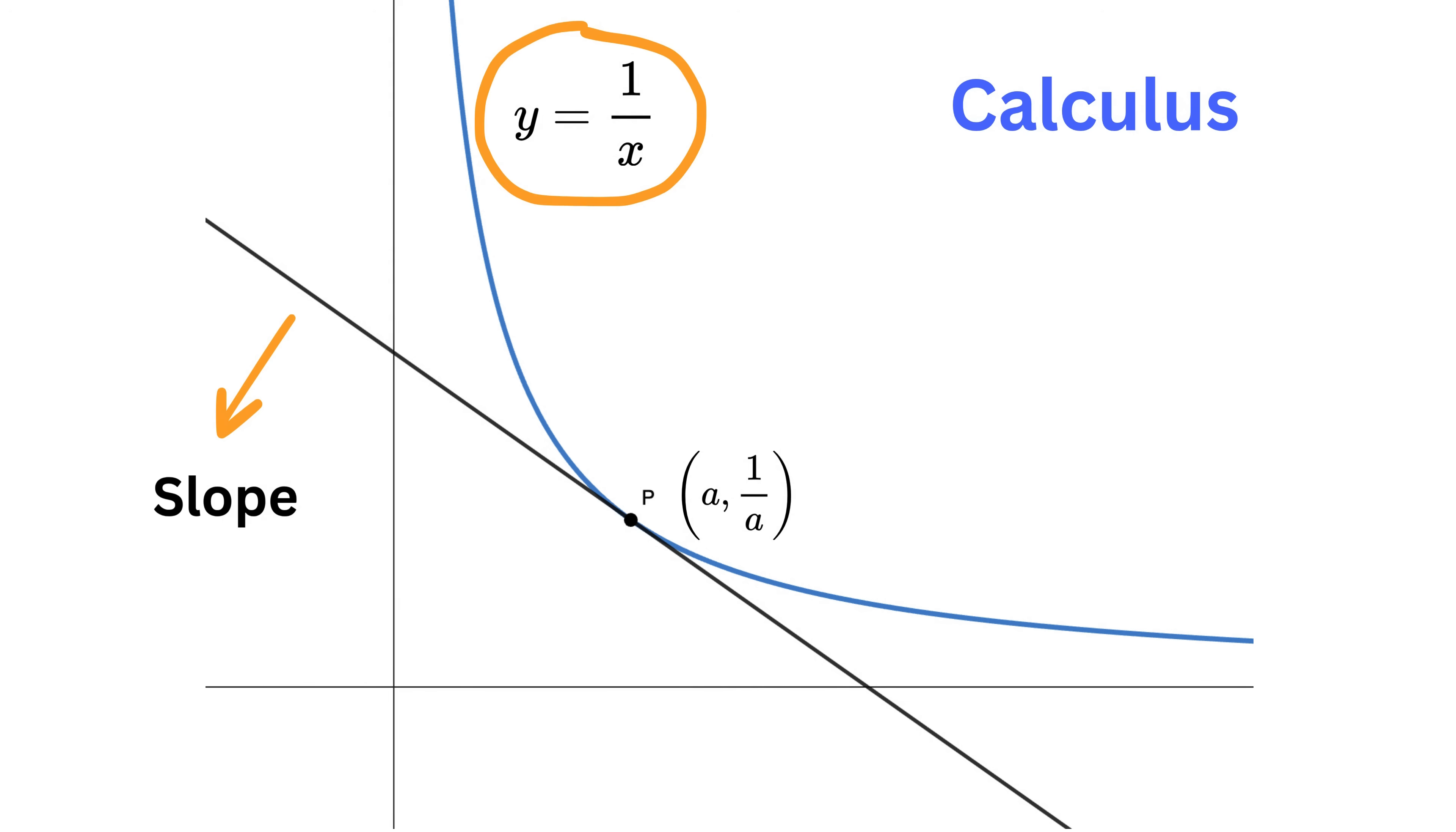So, for our curve y equals 1 by x, we find its derivative with respect to x. Now, the derivative of 1 by x is minus 1 by x square.